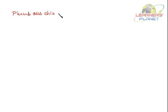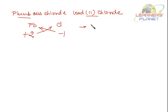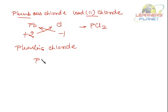For plumbous chloride, also written as lead 2 chloride, we write lead (Pb) and chlorine (Cl). The valency of lead is 2, so it is plus 2, and chlorine is minus 1. Cross over the charges — only the numbers — and you get PbCl2. For plumbic chloride, lead is plus 4 and chlorine is minus 1. Cross over the charges and you get PbCl4.